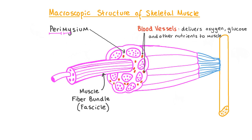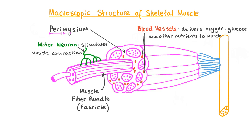Blood brings oxygen, glucose, and other nutrients to the muscle cells to allow them to respire, release energy, grow, and repair themselves. Although they might not actually be visible without a microscope, motor neurons are nerve cells that carry out the important function of stimulating muscle contraction.